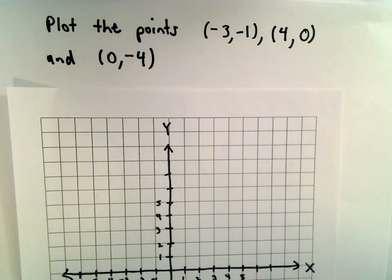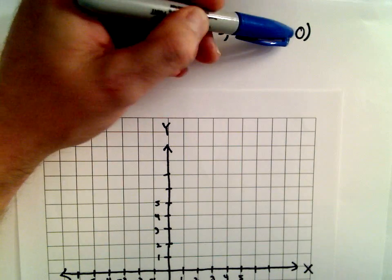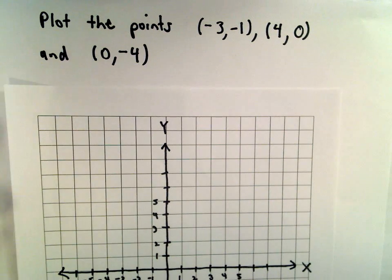Okay, in this example, we're going to plot three more points: negative 3 comma negative 1, 4 comma 0, and 0 comma negative 4.